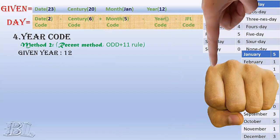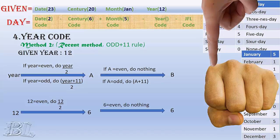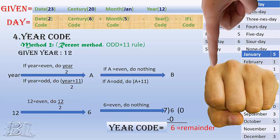To find the year code, we use the recently developed method, or the odd-plus-11 rule. Our given year is 12; it is even, hence we divide it by 2 and get 6. Again, 6 is even, so do nothing and get 6 as a result. Since the year divided by 2 is even — that is, 12 divided by 2, or 6, is even — the year 2012 is a leap year. So dividing 6 by 7 gives the remainder of 6, which is the year code.